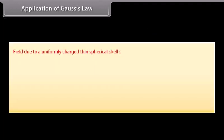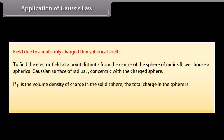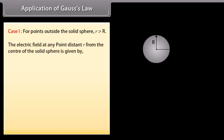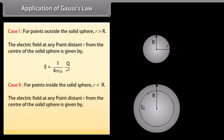Field due to a uniformly charged thin spherical shell: to find the electric field at a point distant r from the center of a sphere of radius R, we choose a spherical Gaussian surface of radius r concentric with the charged sphere. If ρ is the volume density of charge, the total charge is Q = (4/3)πR³ρ. Case 1 — for points outside the solid sphere (r > R): the electric field equals (1/4πε₀) × Q/r². Case 2 — for points inside the solid sphere (r < R): the electric field equals (1/4πε₀) × r³/R³ × (Q/r²), i.e., proportional to r.